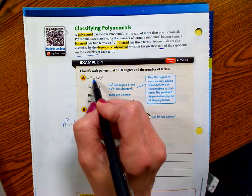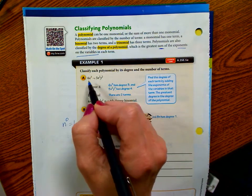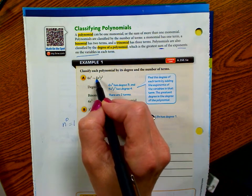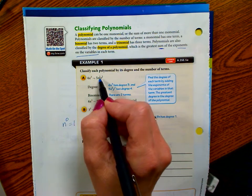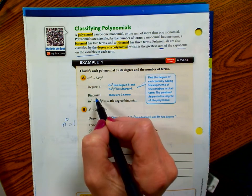So first of all, this subtraction—when you have subtraction or addition, that is separating your terms. So that subtraction is really a negative five, but that is making it two different terms. So this is a two-term polynomial, which means it is a binomial.